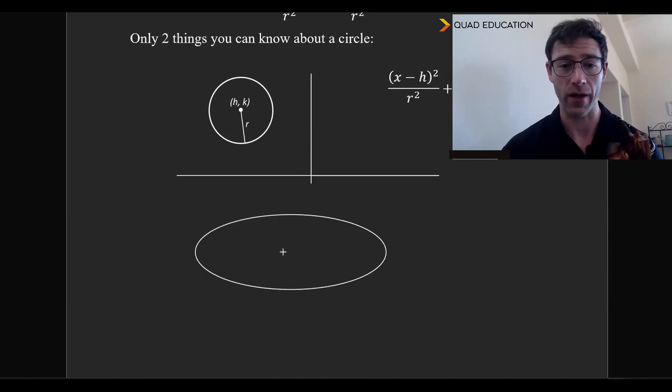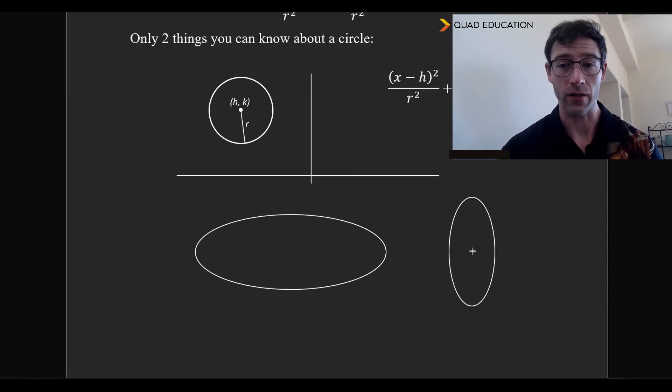In this case, we have the ellipse here that has the major axis, which is the longer element along the x. The minor axis is along the y. This is an ellipse, and something like this would also be an ellipse.